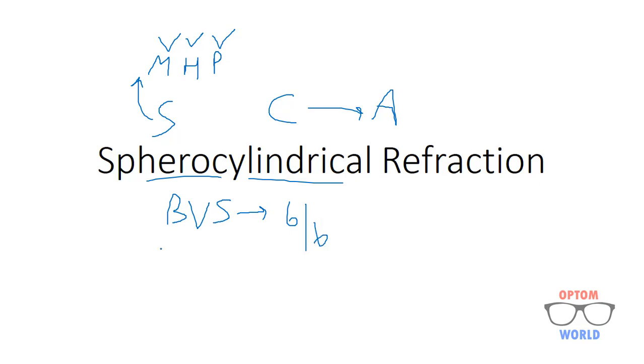With the best vision sphere, the visual acuity will be maybe 6 by 12, 6 by 18, or something else like that. This gives you an indication that the patient may have astigmatism and you have to use cylindrical lenses to correct it. Basically, you are converting BVS refraction into spherocylindrical refraction.